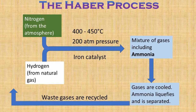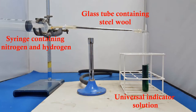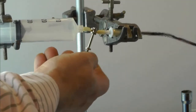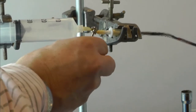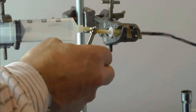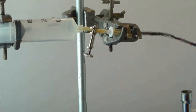Naturally it is not possible to replicate the high pressures used in the Haber process, but it is possible to carry it out after a fashion in the laboratory at room temperature and to show that ammonia is indeed produced. We can confirm that this gas is indeed ammonia by carrying out a few tests.